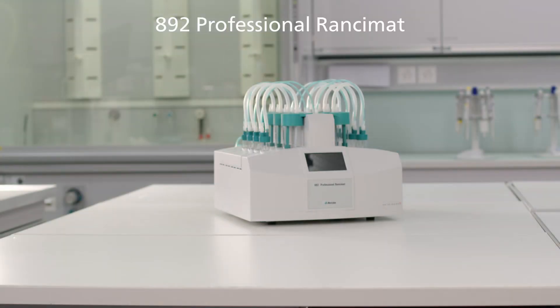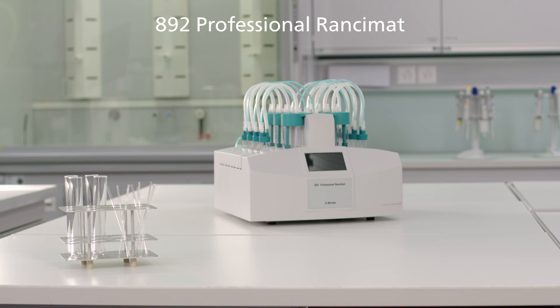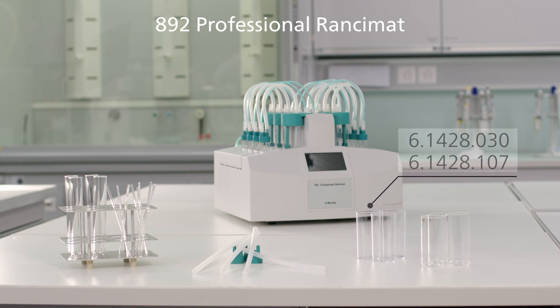Before we start I want to give you an overview of the different accessories for the three instruments. For the oxidation stability measurement of oils you use the short reaction vessel, the air tube for oil measurements, the silicon tubing and glass or polystyrene beakers.